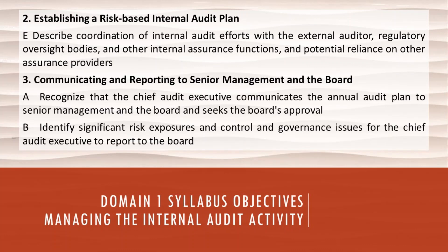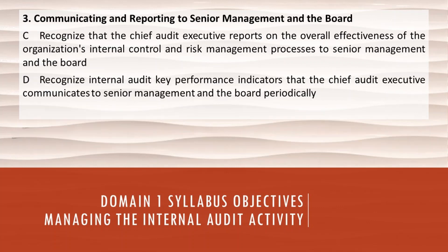Number 3: Communicating and reporting to senior management and the board. A. Recognize that the chief audit executive communicates the annual audit plan to senior management and the board and seeks the board's approval. B. Identify significant risk exposures and control and governance issues for the chief audit executive to report to the board. C. Recognize that the chief audit executive reports on the overall effectiveness of the organization's internal control and risk management processes to senior management and the board. D. Recognize internal audit key performance indicators that the chief audit executive communicates to senior management and the board periodically.